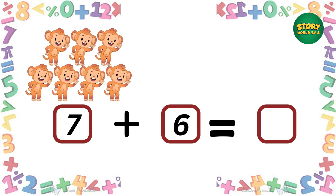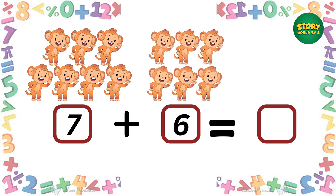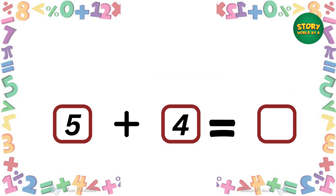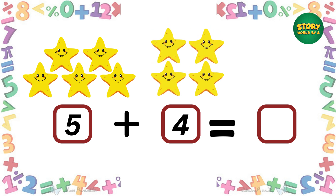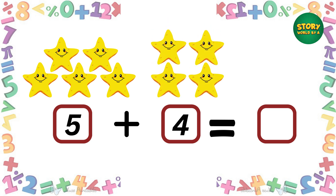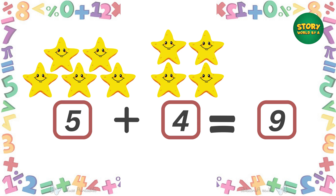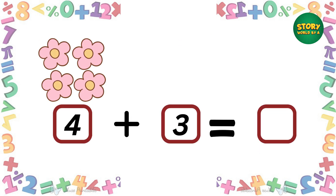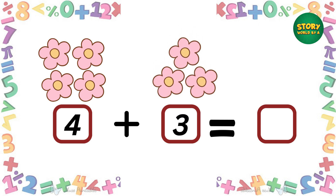We have seven monkeys — if we add six more monkeys, how many do we have? Yes, we have thirteen monkeys! We have five stars — if we add four more stars, how many do we have? Yes, we have nine stars! We have four flowers — if we add three more flowers, how many do we have? Yes, we have seven flowers!